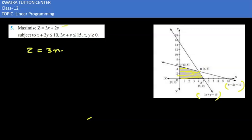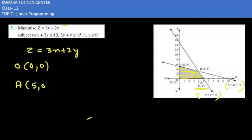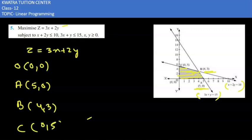Now we have to substitute these four corner points into the objective function z = 3x + 2y. Our first point, the origin, has coordinates (0, 0). Then we have point A at (5, 0), point B at (4, 3), and finally point C at (0, 5).